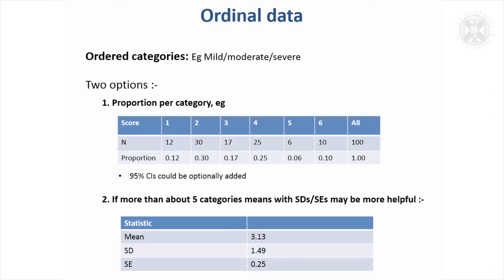An overall alternative, if you've got more than about five ordered categories, might be to just take the mean of the scores and summarise it that way — probably just give the standard error so you get a feel for the overall mean. Of course your categories are going to be descriptions like mild, moderate, or severe, so you would have to assign a numeric ordering such as one, two, three. It's worth bearing in mind that this isn't the only way of summarising ordinal categorical data, and you could take the option of averaging it as well.